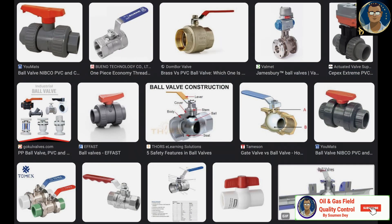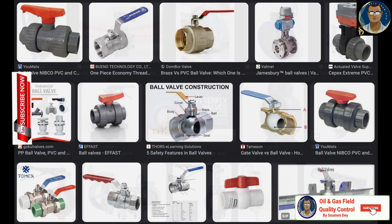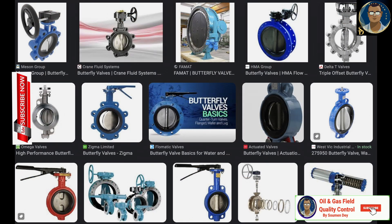Ball valves are equipped with quick-acting 90-degree turning handles. They use a ball to control flow and provide easy on/off control. They are generally considered faster and easier to operate compared to gate valves. Butterfly valves are compact, quick-acting rotary motion valves ideal for tight spaces. Butterfly valve bodies are found in various configurations.